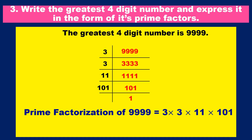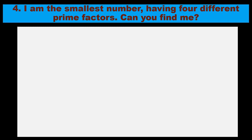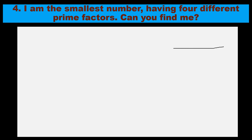These are the prime factors of 9999. Our question was to express this 4-digit number in the form of its prime factors: 3, 3, 11, and 101 are all prime numbers, so it is correctly expressed. Now here is the fourth problem: I am the smallest number having 4 different prime factors — can you find me? So we need the least smallest number that has 4 different prime factors.